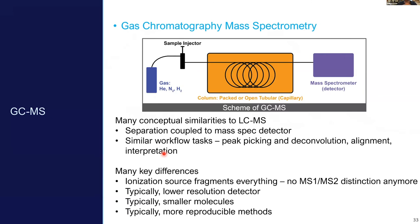Briefly discussing GC-MS concepts: a lot of them are very similar to LC-MS — same overall idea of peak picking, deconvolution, alignment, and interpretation. A couple of main differences include the ionization source is different, so we no longer have an MS1/MS2 distinction — we just get fragmentation ion spectra. Typically the mass analyzer is much lower resolution, but usually that's okay because we're looking at smaller molecules. A big advantage is GC-MS is much cheaper, more labs have it, it tends to be more reproducible, and so there are a lot more databases available for comparison.